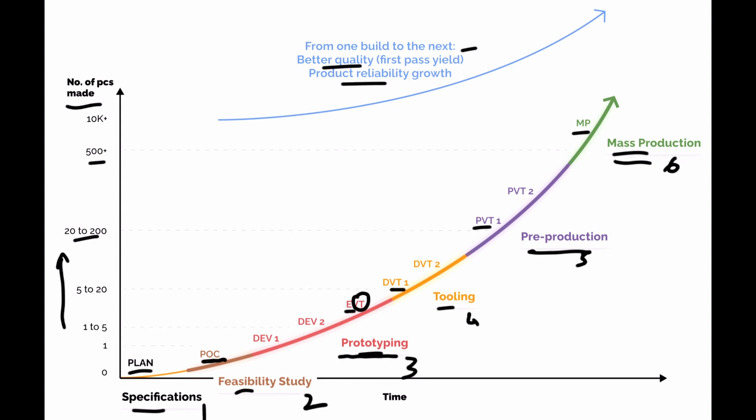Then it goes into prototyping, and here we call dev1, dev2. In most cases, there are a number of prototypes involved. It's not something that gets nailed at the first prototype. But then here, what happens with a lot of engineering design work, obviously, on the mechanical side, on the electronic side, maybe firmware design. It's very important to design for manufacturing, right? DFM and design for quality and for reliability and so on. DFX, they call it.